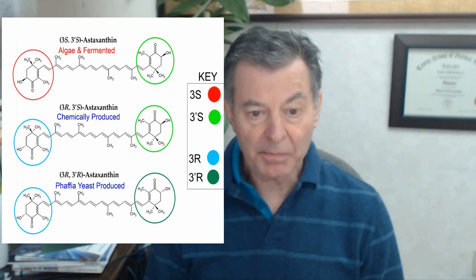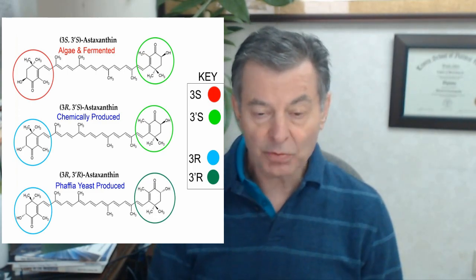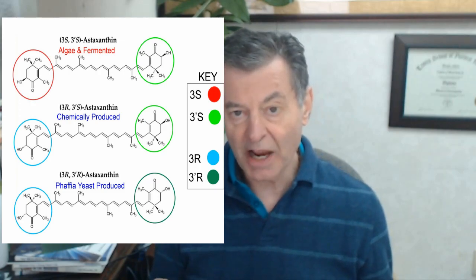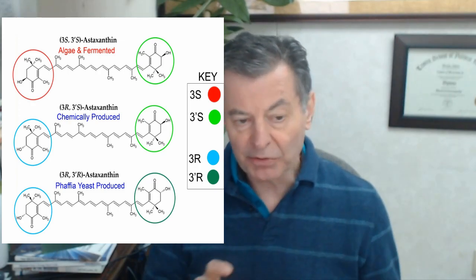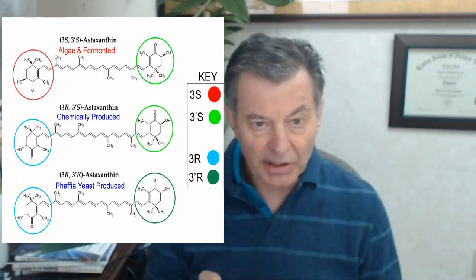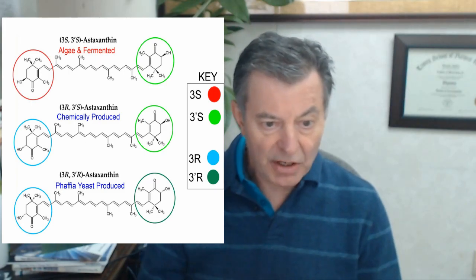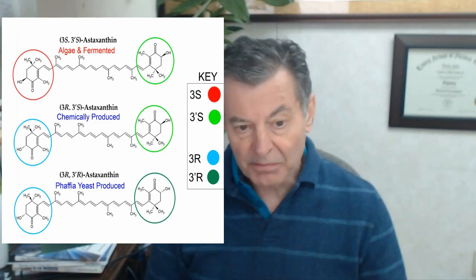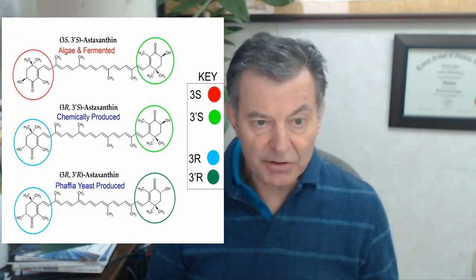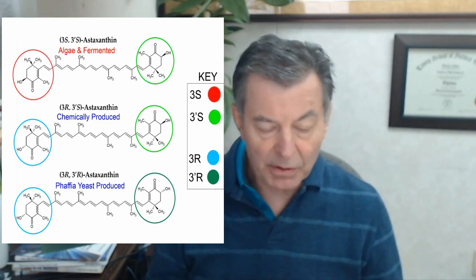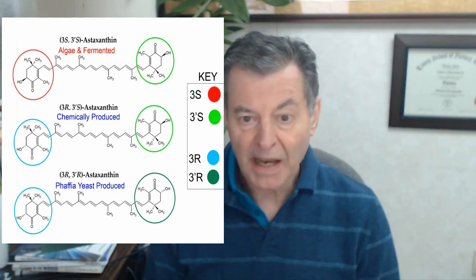Then we get the chemically produced — as I said, that's 3R3S — and you're not getting nearly the true astaxanthin molecule; it's only part of it. They build this chemically: they start with one structure, get a carbon molecule and then a hydrogen molecule, and build this thing up. So you're not getting nearly as much astaxanthin.